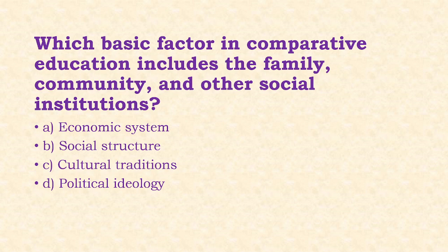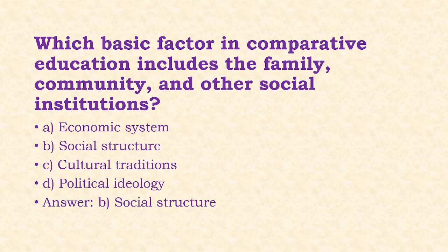Next: Which basic factor in comparative education includes the family, community, and other social institutions? Options: economic system, social structure, cultural traditions, political ideology. The answer is option B, that is social structure.